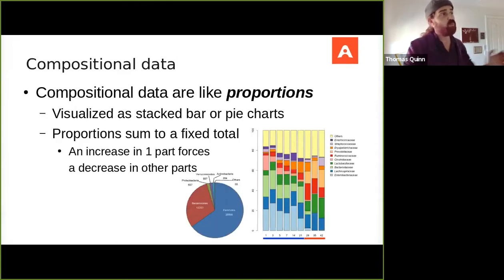I'm going to assume that if you're watching this video, you already take it for granted that sequencing data are compositional. And what I mean by that is that they're proportional data. They carry relative information, not absolute information. And it's helpful to think about them in the way we visualize them most often, which is through the use of stacked bar charts or pie charts.